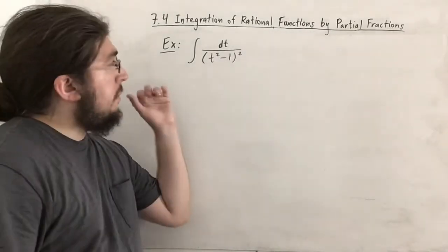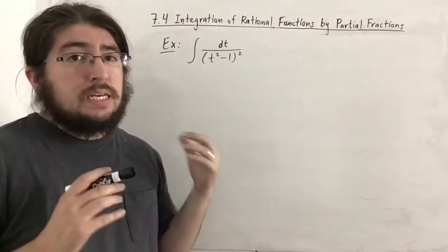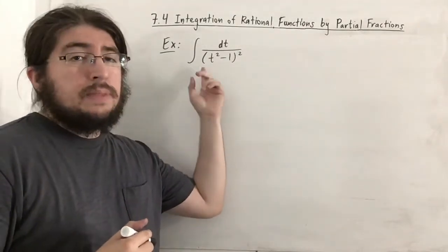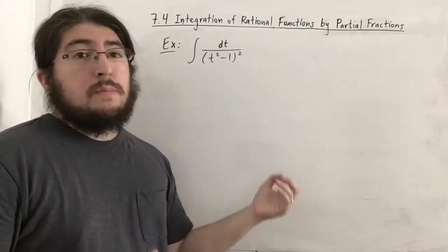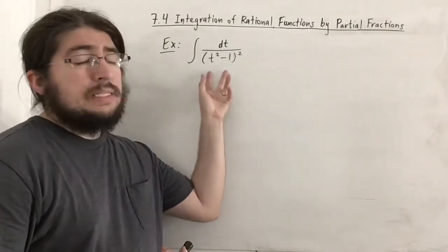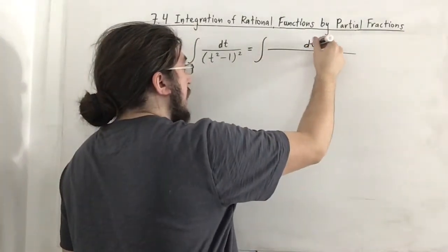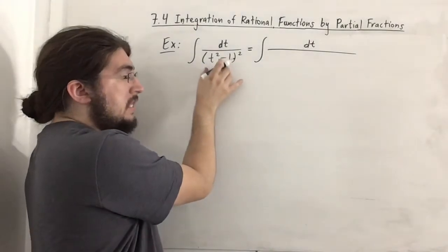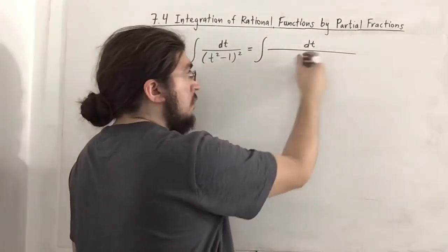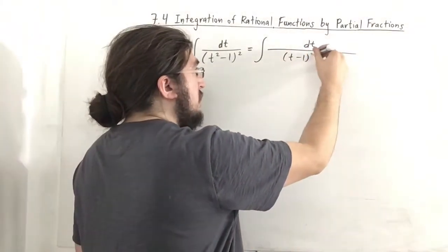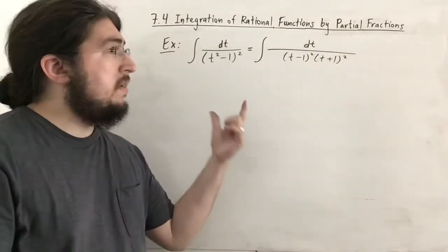The next example has a quadratic factor squared in the denominator. However, this quadratic is not irreducible — it's t squared minus 1, which is a difference of squares. So t squared minus 1 factors as (t minus 1)(t plus 1). Squared, we get (t minus 1) squared times (t plus 1) squared. This is actually Case 2: repeated linear factors.